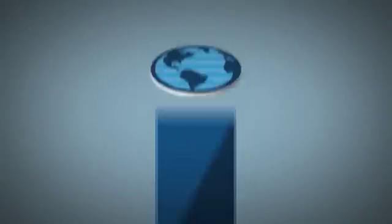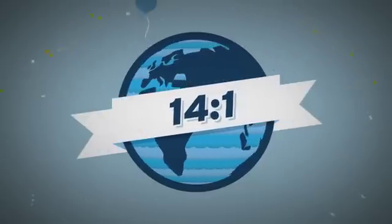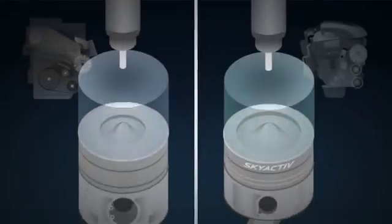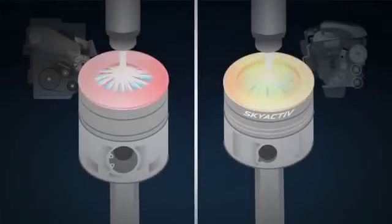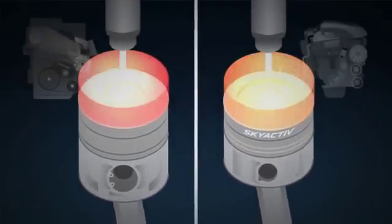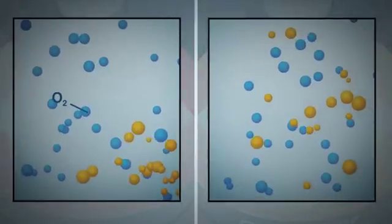First, we defied convention by dropping the compression ratio to the lowest in the world for a diesel – 14 to 1. This delays combustion by just half a millisecond, which is enough time for the air and fuel to mix more thoroughly, reducing hot spots of oxygen and diesel that would otherwise turn into pollutants.